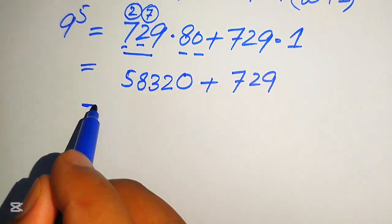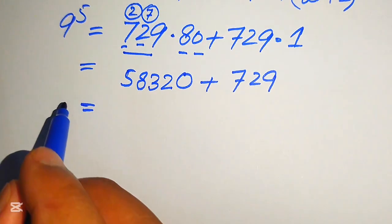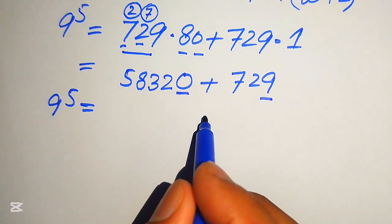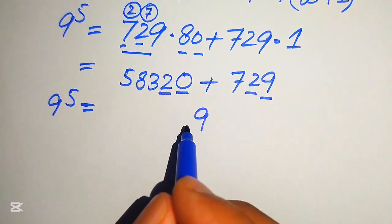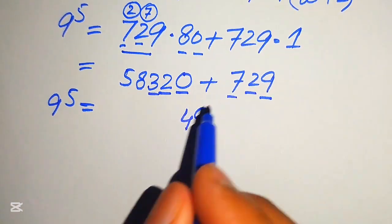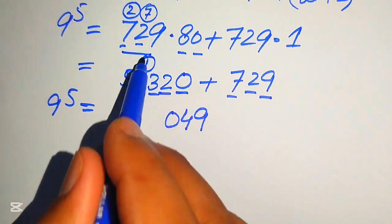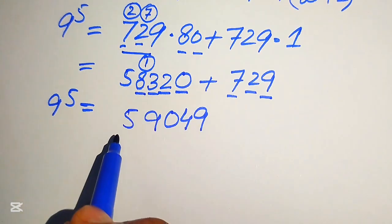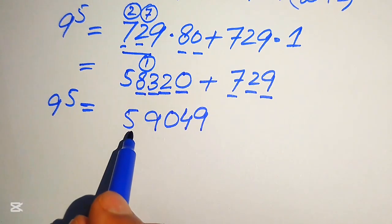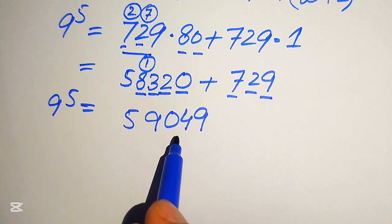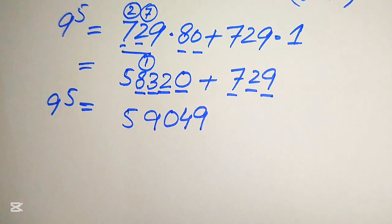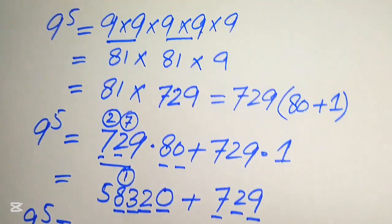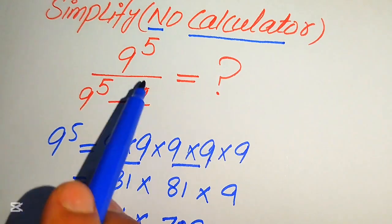In the next step we add these two numbers. 0 plus 9 is 9; 2 plus 2 is 4; 3 plus 7 is 10, write 0 carry 1; 8 plus 1 is 9; and at the last we have 5. So 9 to the power of 5 equals 59,049. Now we move back and substitute this value into the original algebraic expression.